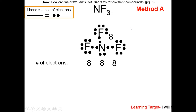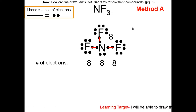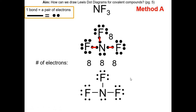You can redraw the Lewis dot diagram for clarity to see the bonding electrons and the lone pair electrons. Just follow the guidelines: nitrogen forms three bonds, and each fluorine forms one bond.